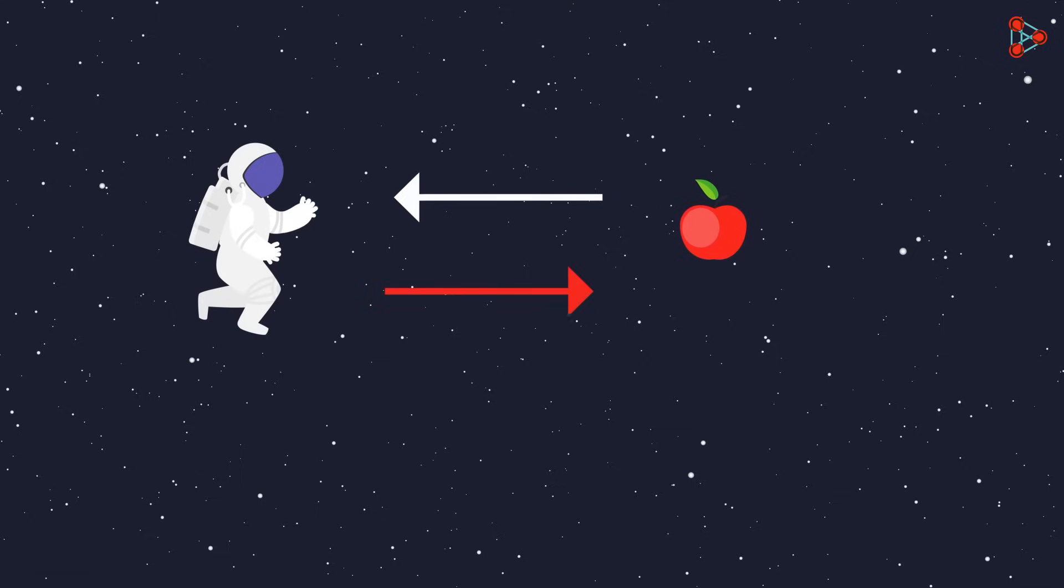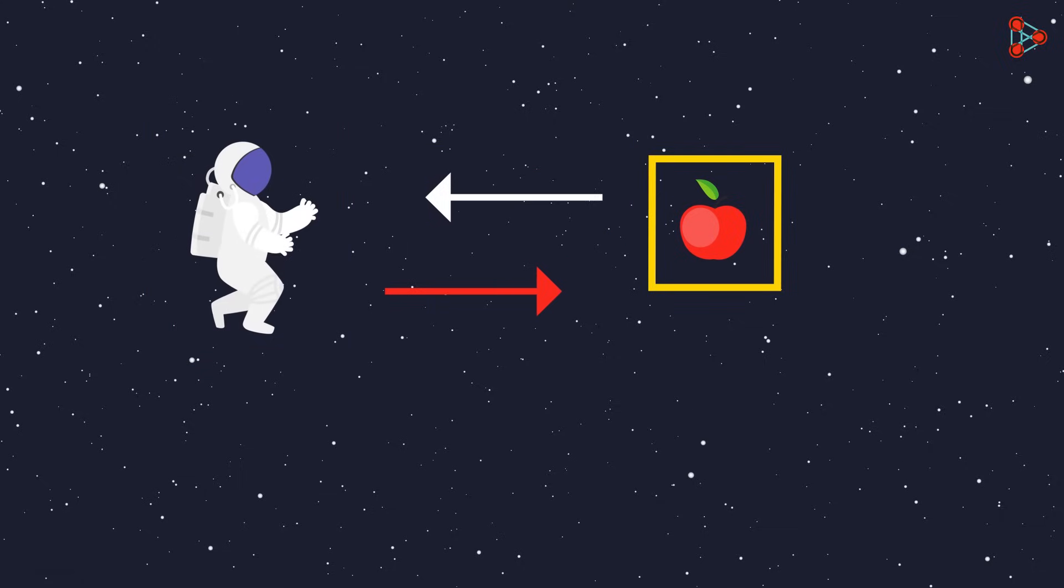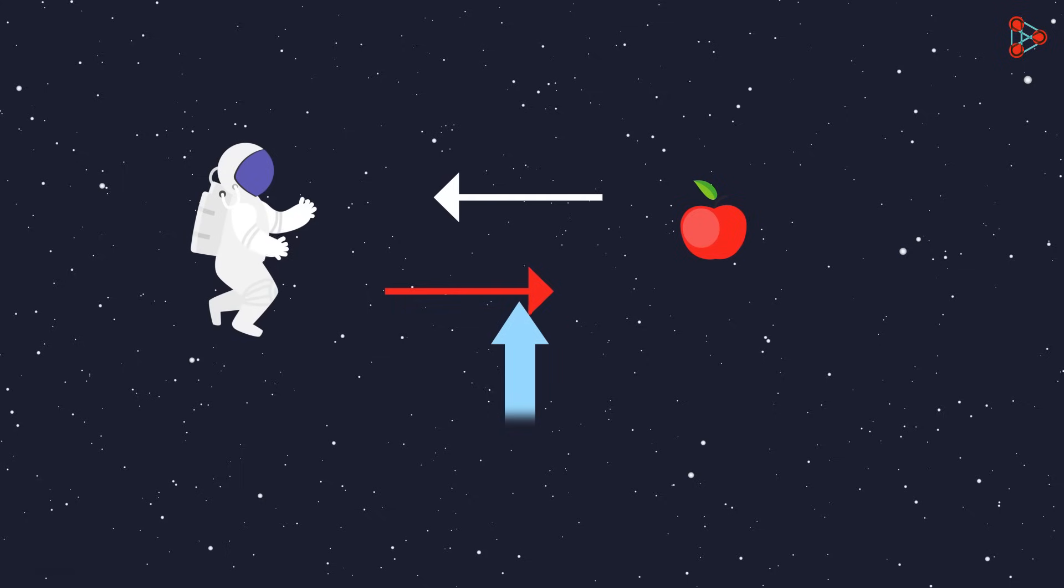In this case, both objects are pulling the other object towards each other. This object is pulling this one towards itself, and the other object is pulling this one towards itself. This attractive force between any two masses in the universe is called the gravitational force.